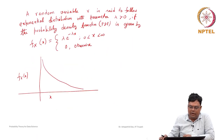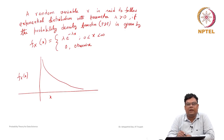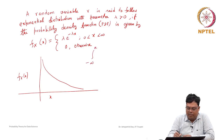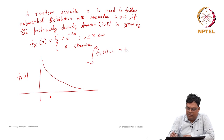Note that this density function also satisfies all the properties of a probability density function. When we discuss the probability density function, it is always greater than or equal to 0. Not only that, the integration from minus infinity to plus infinity of f(x) dx should be equal to 1. Let us check that this is equal to 1 or not.